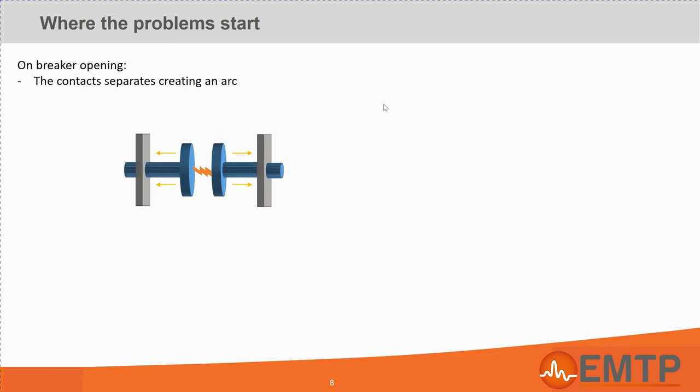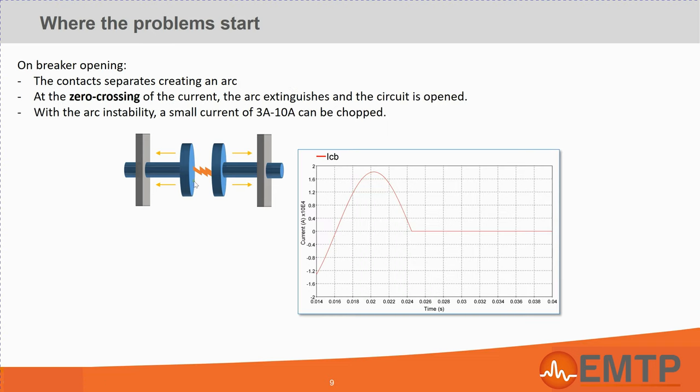When the breaker receives the opening order, the contacts separate, but the current is not interrupted right away. An arc is formed and the current keeps circulating. When the instantaneous value of the current approaches zero, the arc extinguishes and the circuit is open. We say that circuit breakers interrupt the current at the zero crossing.